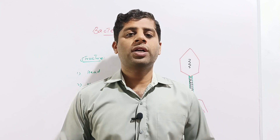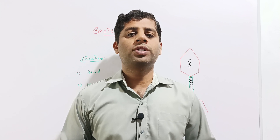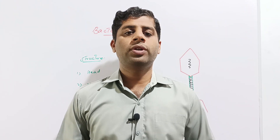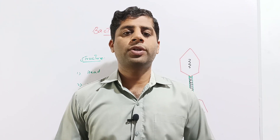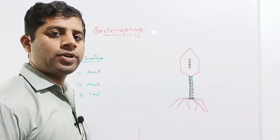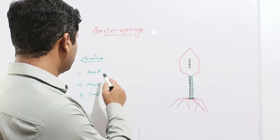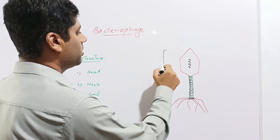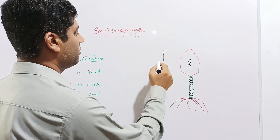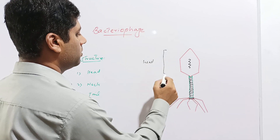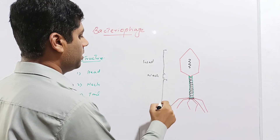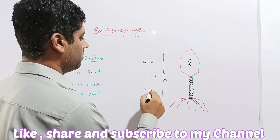Like other viruses, bacteriophage also has two components: the genome, which is enclosed in a protein coat or protective cover called capsid. We classify the bacteriophage structure into three parts: the head, neck, and tail.